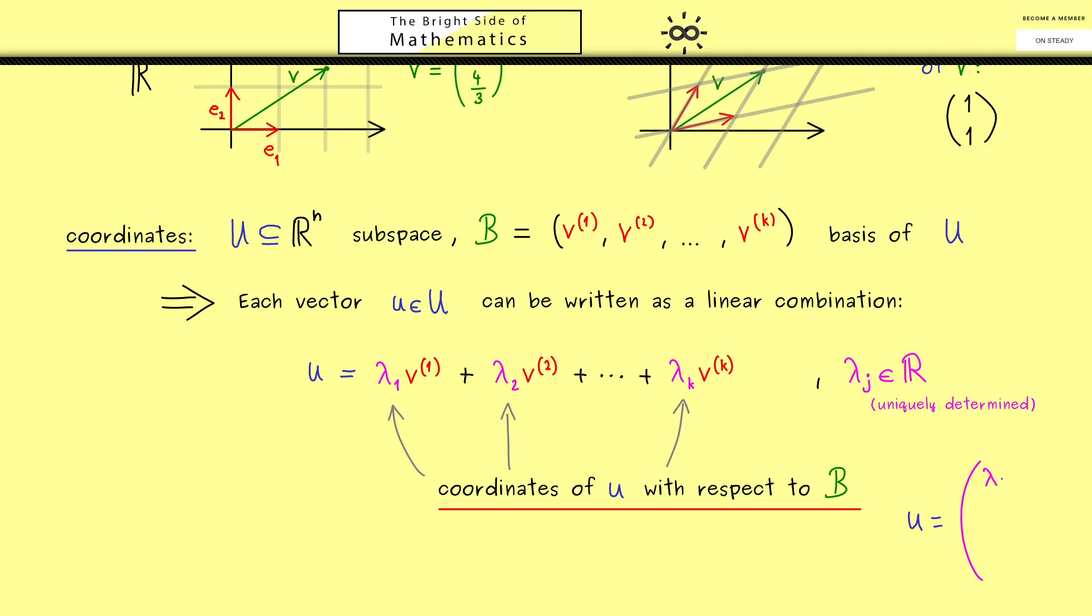One simply puts the coordinates λ₁, λ₂ and so on into a column vector. However now you see this could be definitely confusing because u is a column vector with n components. Therefore the only correct way to interpret this equality sign here is to read this column vector as this linear combination here. And in order to emphasize this one usually puts the basis B in the index. So you see this notation can be helpful if we just do vector calculations in the subspace U. Then we just calculate with the numbers we actually need.